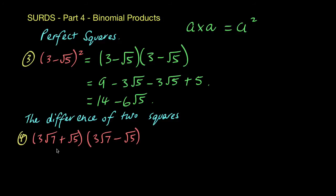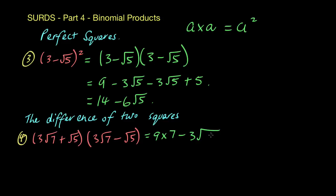These binomial products almost look like perfect squares except we've got a plus in the first binomial and a minus in the second. They're called the difference of two squares. That plus and minus will counter each other, so some terms cancel out. First: 3 root 7 times 3 root 7 — the coefficients 3 times 3 give 9, and root 7 times root 7 gives 7, so we get 9 times 7. Then 3 root 7 times minus root 5 gives minus 3 root 35. For the inner part, plus root 5 times 3 root 7 gives plus 3 root 35.